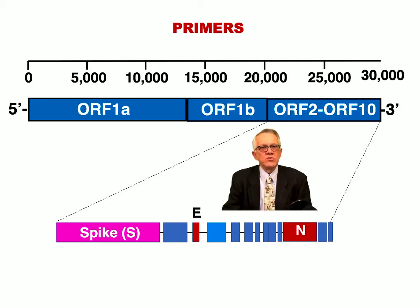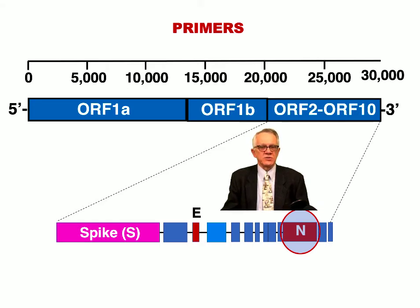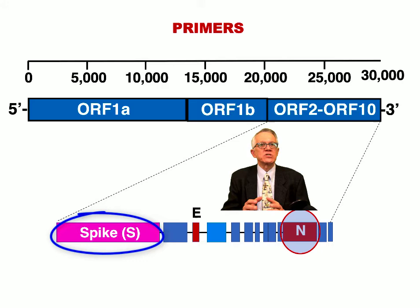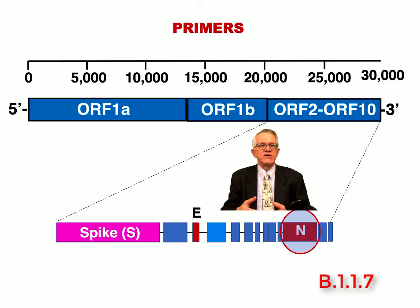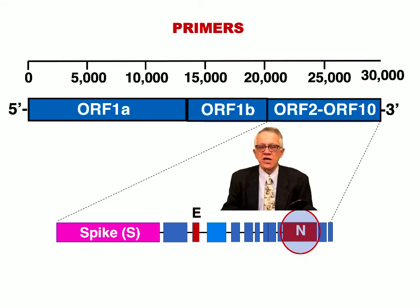For the primers, we utilize primers targeting certain parts of the sequence. In the United States, most primers being used are two sets targeting the region of the genome that encodes for the N protein. Other countries use other parts of the virus sequence. In the United Kingdom, for example, they use three sets of primers, one targeting the spike protein. That's how they discovered the important variant now called the British variant B.1.1.7 — one of the primer sets was not working, but the other two were, allowing them to discover this important variant.